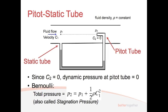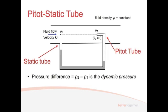The total pressure is also called the stagnation pressure, because the flow stagnates at that point. From this, we can work out the pressure difference P2 minus P1. Notice the pressure difference here is P2 minus P1 — the other way around compared to the venturi meter — because the U-tube manometer is inverted: this level is lower than the other, so we take P2 minus P1 to get a positive value.